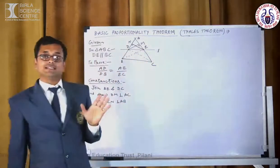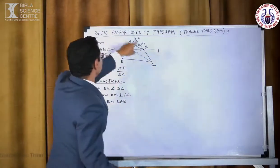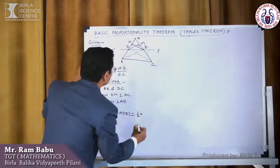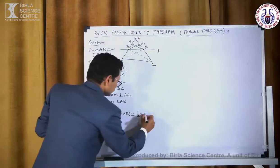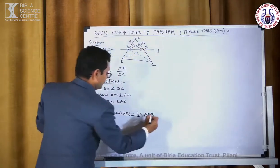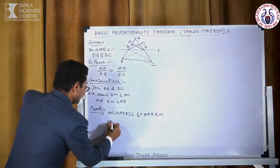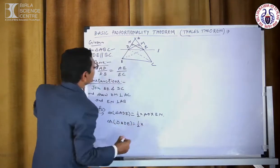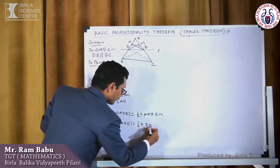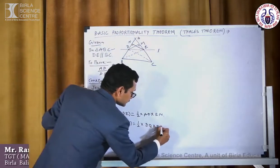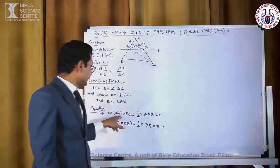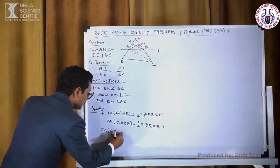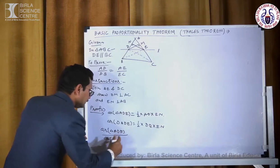We know that the area of a triangle is equal to half multiplied by base multiplied by height. First we will find the area of triangle ADE: that is half multiplied by base AD multiplied by perpendicular height EN. And area of triangle BDE is equal to half multiplied by base DB. Now we will find the ratio of the area of triangle ADE to the area of triangle BDE.